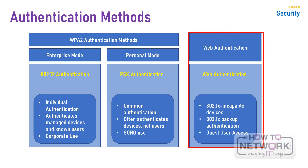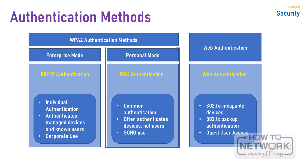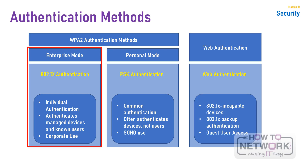Under WPA2 authentication, we have WPA2 personal mode, which uses WPA2 PSK or pre-shared key authentication. Here, a common key is statically configured on the client and the AP. WPA2 personal mode is designed for environments where there is no RADIUS authentication server. It provides inadequate security for an enterprise wireless network. If attackers break the WPA2 PSK, then they can access all device data.